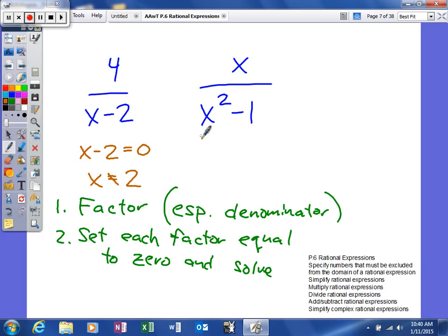Now on this one, we can factor this. This is the difference of squares: x plus one times x minus one. When you set both of these equal to zero, you'll get x equals negative one and x equals positive one. Those are the excluded values because when you plug those values back in, they make you divide by zero. That's how to find excluded values.